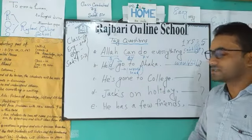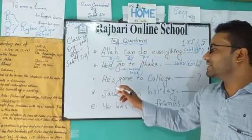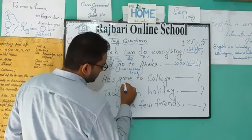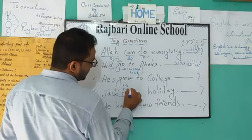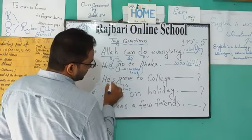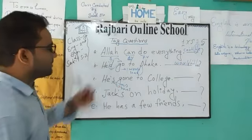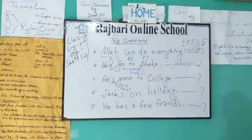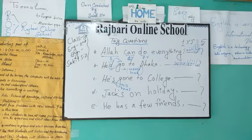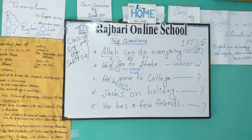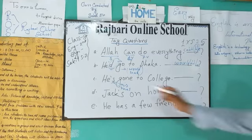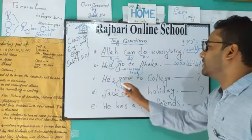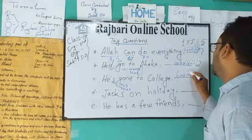For sentence C, 'He's gone to college.' The apostrophe S indicates 'is' or 'has.' Since 'gone' is a past participle form of the verb, we should use 'has.' Therefore the tag is: hasn't he.